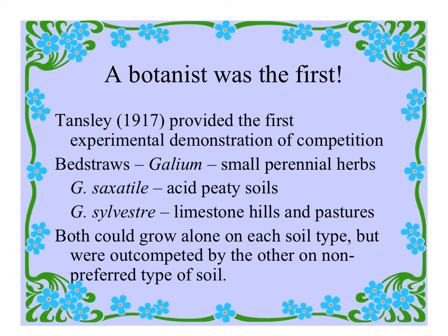One of the first experimental demonstrations of competition was by Tansley in 1917, using bedstraws — species of Galium, small perennial herbs. Galium saxatile grows in acid peaty soils in Great Britain; Galium sylvestre is found on limestone hills and in pastures. When grown singly, each could grow alone on each soil type. But when grown together, one outcompeted the other on the acid soil and the other on the limestone soil — matching where each is found in nature.